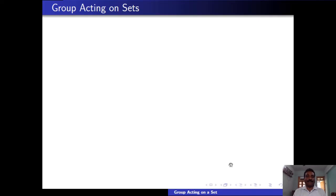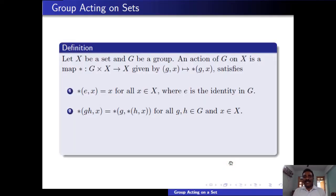Let us see the definition of a group acting on a set. Let X be any set and G be a group. It is not necessary that X is related to G. The action of G on X is defined as a map star from G cross X to X, given by the ordered pair (g, x) going to star of g of x. It must satisfy the following properties. The first one is: star(e, x) = x for all x in X, where e is the identity element of G.